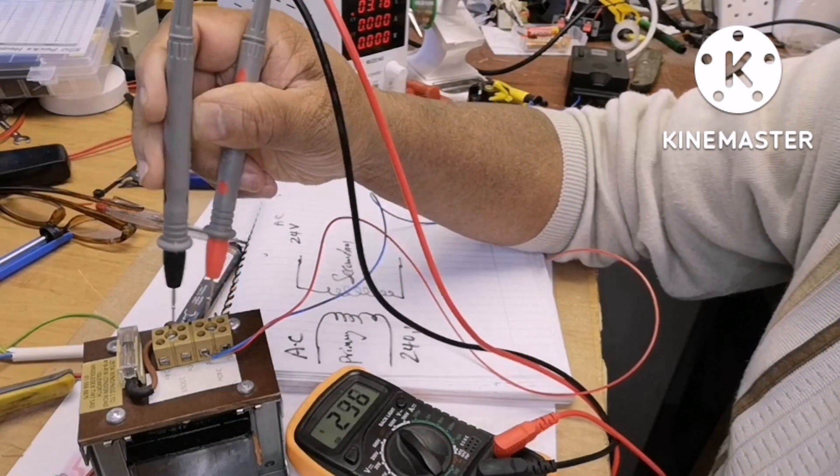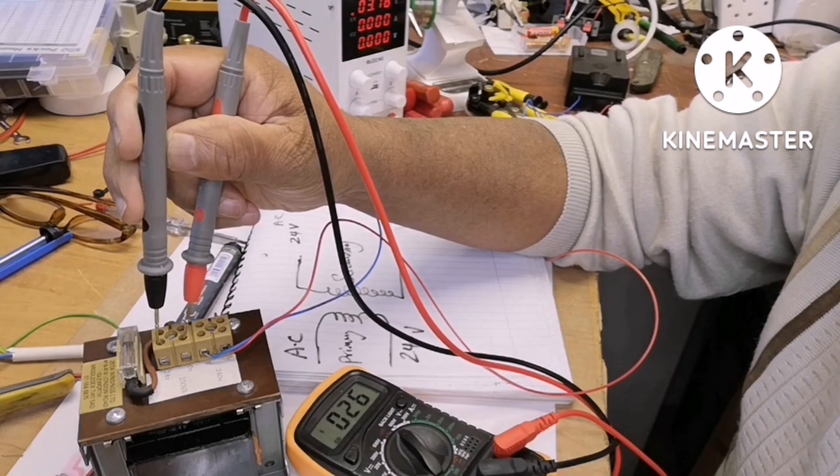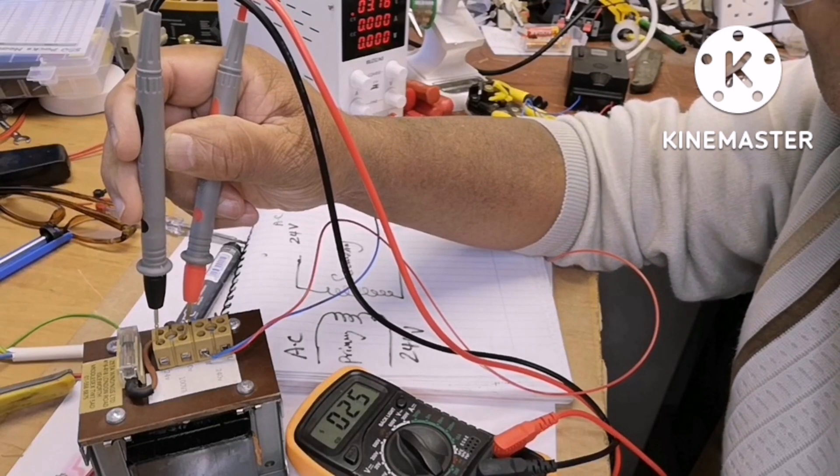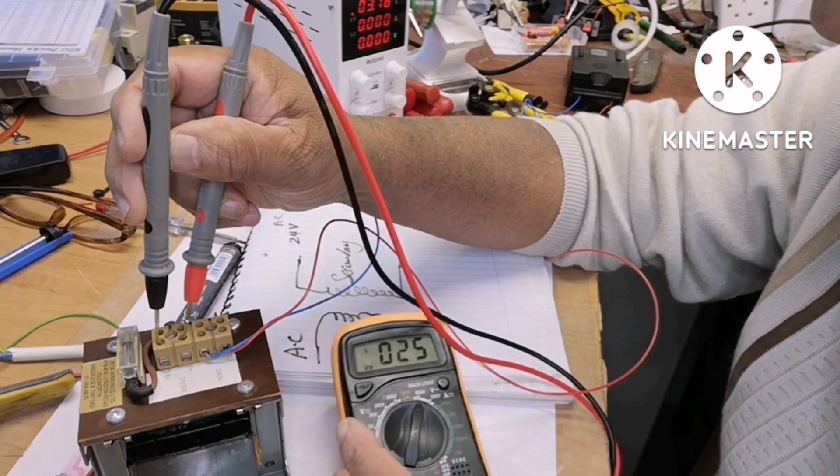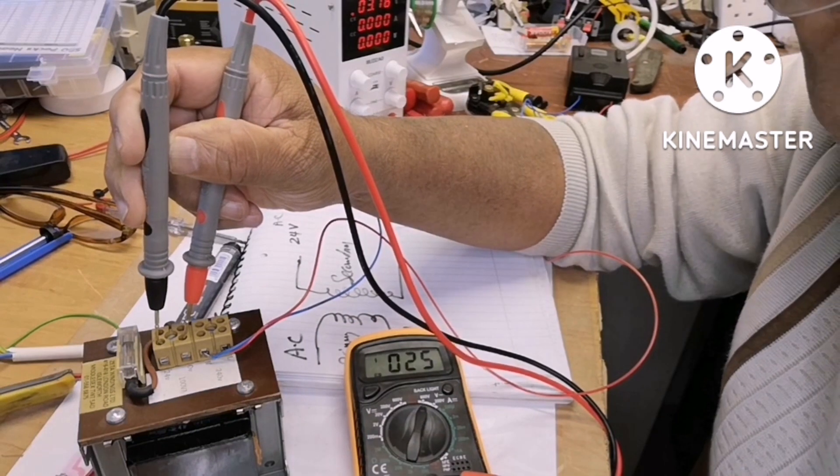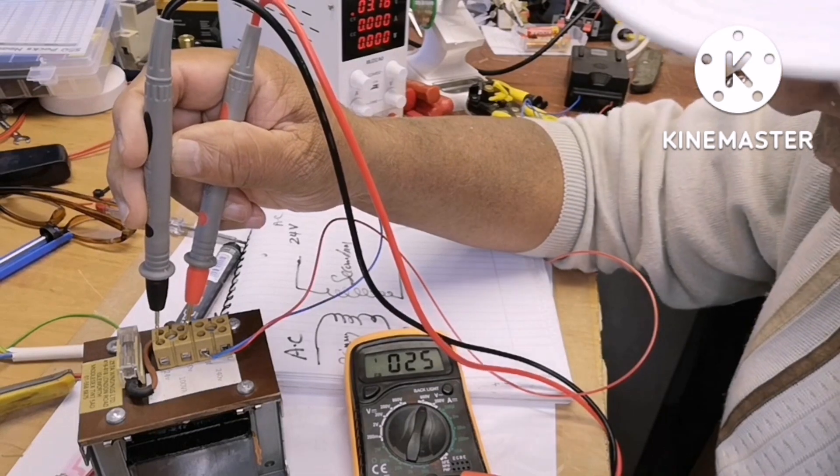As you can see, 25 volts, 26 volts. It's supposed to be 24 volts, but because there's no load on it, it always shows a bit higher.